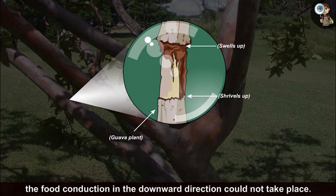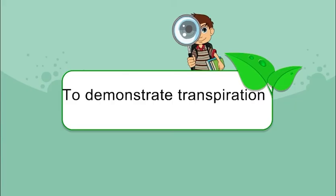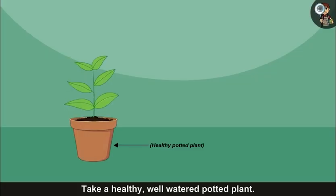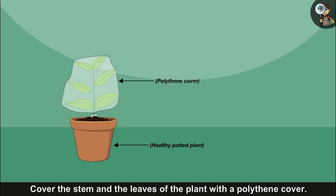To demonstrate transpiration, take a healthy, well-watered, potted plant. Cover the stem and the leaves of the plant with a polythene cover.